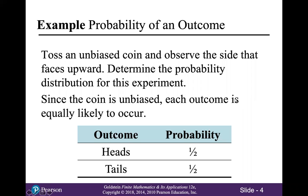In this experiment, there are two outcomes: heads and tails. Because those outcomes are equally likely, each outcome would have probability one half.